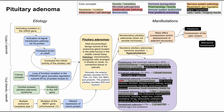Next is corticotroph adenoma, essentially Cushing's disease, where a pituitary adenoma creates excess ACTH causing secondary hypercortisolism. Cushing's disease has a variety of symptoms: it affects the skin with bruising, stretch marks on the abdomen, hirsutism, and delayed wound healing. Patients may also have anxiety, depression, low libido, amenorrhea, and bone fractures. You might also see osteopenia on a bone scan, as well as insulin resistance and secondary hypertension.